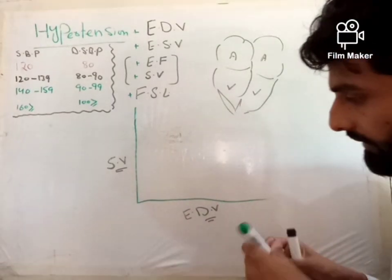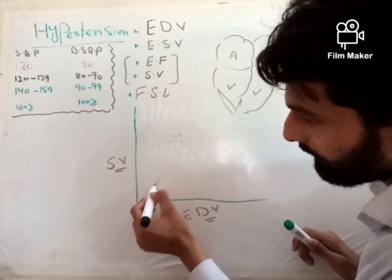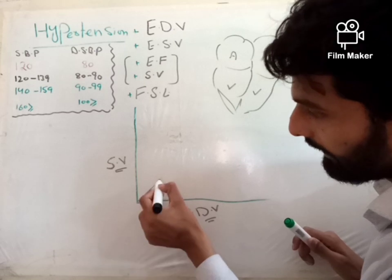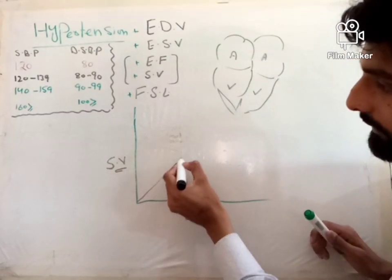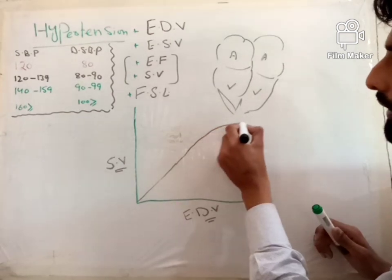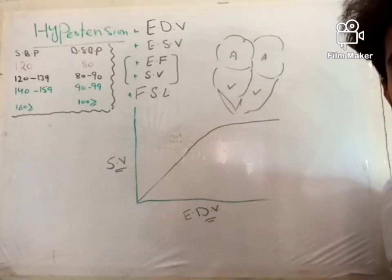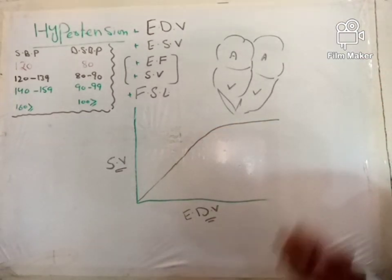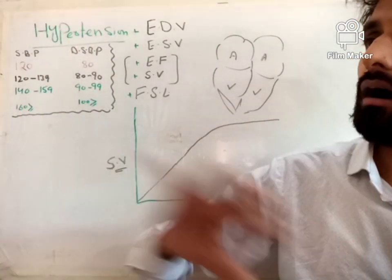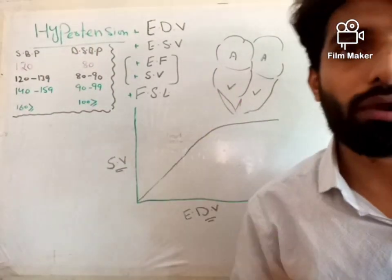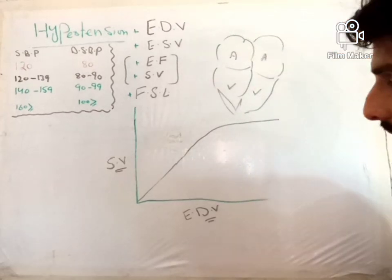This is the reason: if end diastolic volume increases, stroke volume also increases — but to a limit. It doesn't mean you keep increasing end diastolic volume and stroke volume keeps increasing indefinitely.